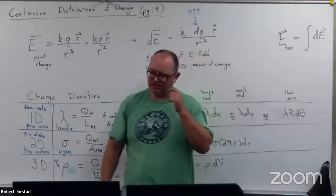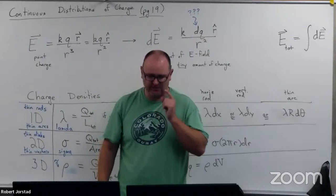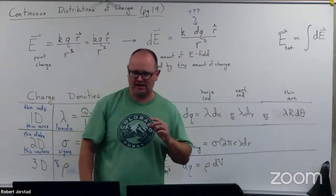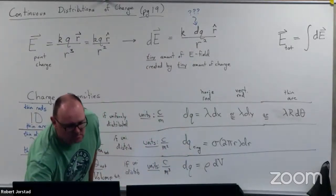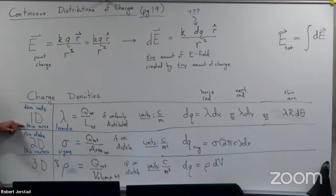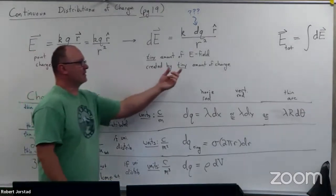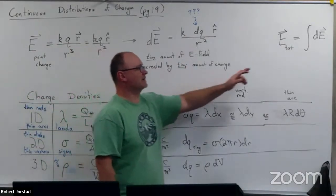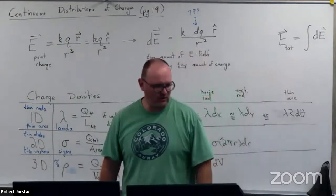We're continuing our discussion of continuous distributions of charge. The last video had an example of a thin rod, and now I want to talk about arcs or rings. A ring is basically an arc that completes the circle. We're going to continue using a point charge formula with a differential charge dQ, and then do an integral.